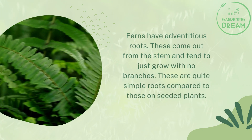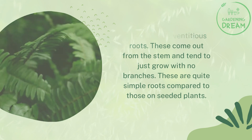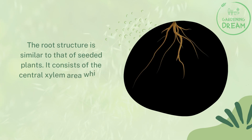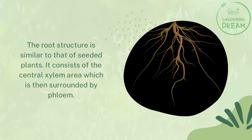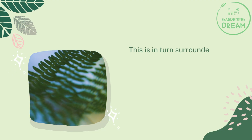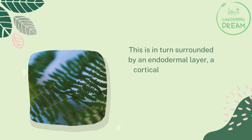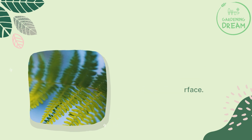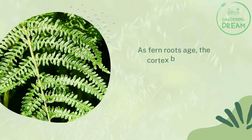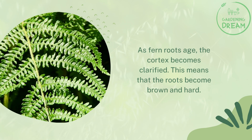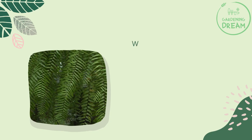Fern roots are quite simple compared to those on seeded plants. The root structure is similar to that of seeded plants: it consists of a central xylem area surrounded by phloem, which is in turn surrounded by an endodermal layer, a cortical layer, and then the epidermis — the absorptive surface.